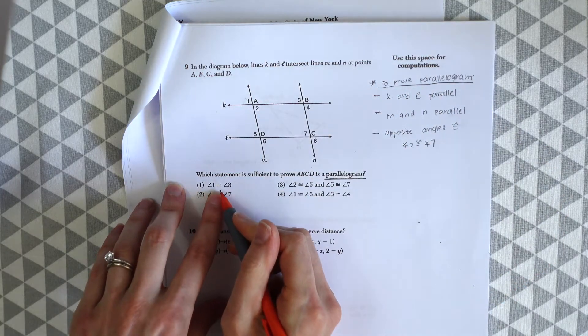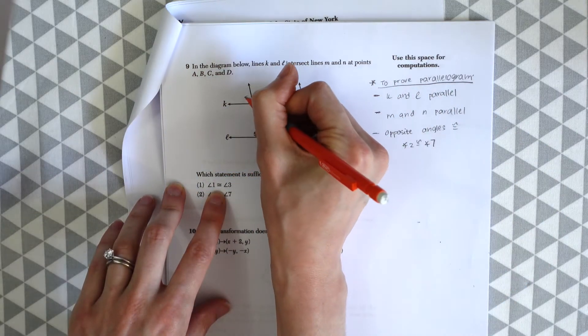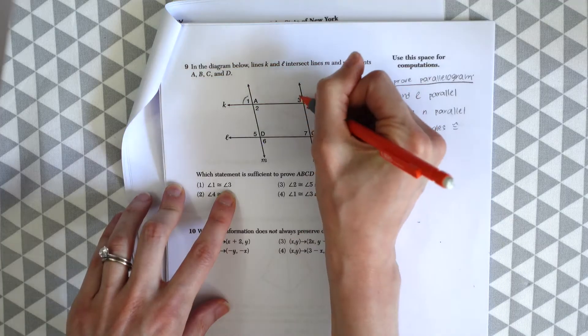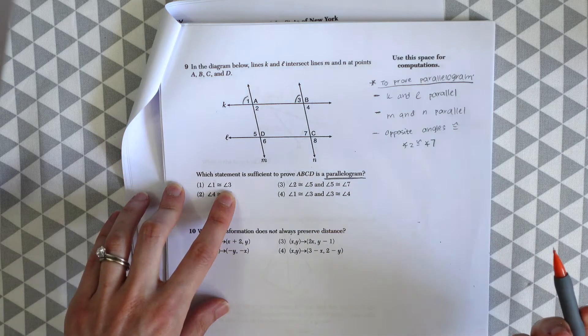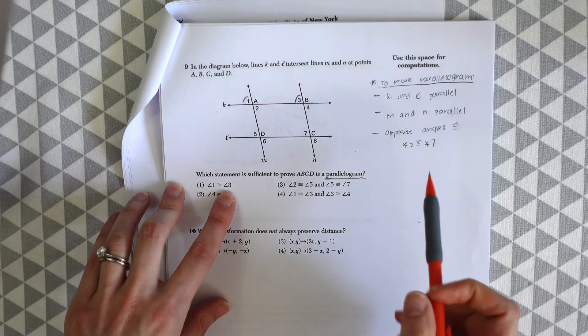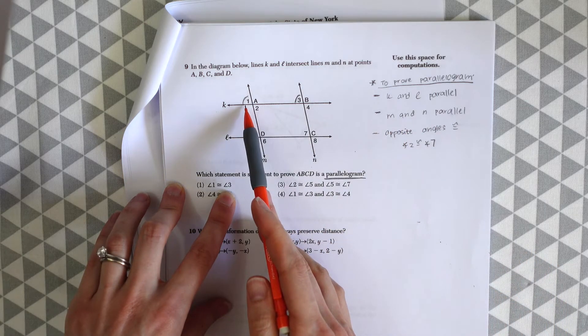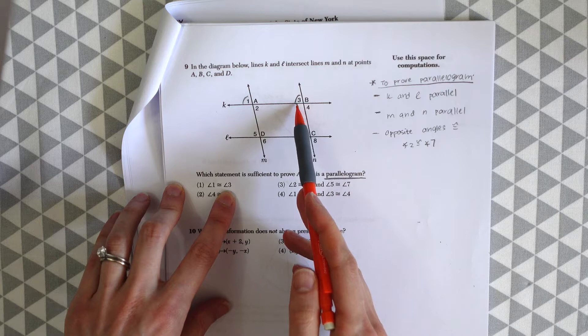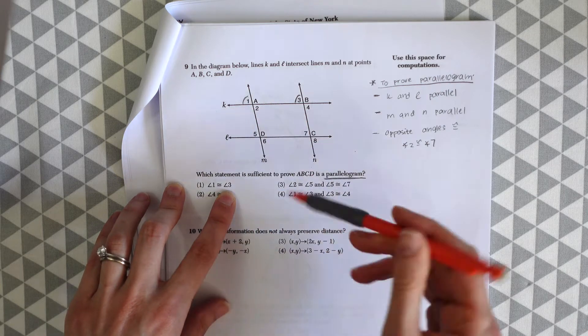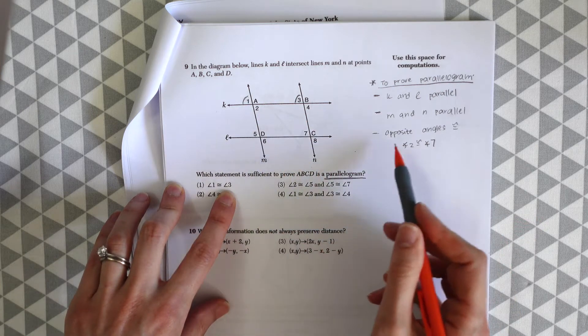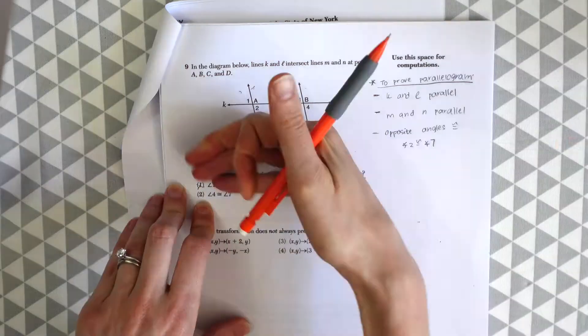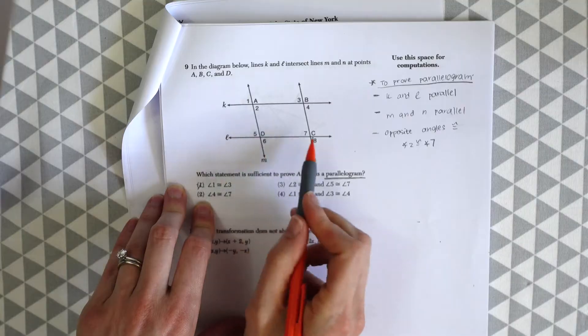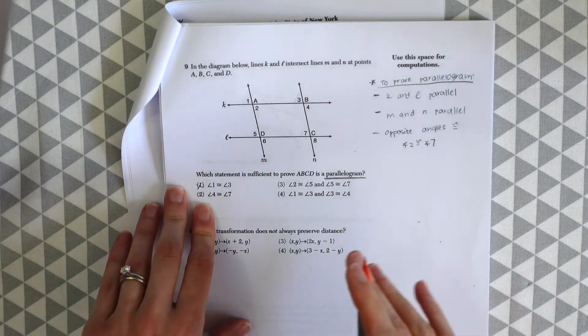So for choice one we have angle one is congruent to angle three. So that's good information but it's not enough to prove that this is a parallelogram. Showing angle one is congruent to angle three just shows us that line M is parallel to line N on our checklist. So not the answer. It doesn't give us any information about line L. So that's how we know that this doesn't make any sense.